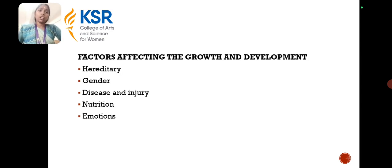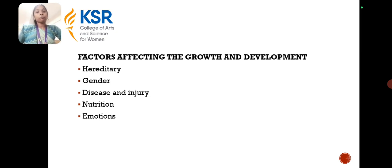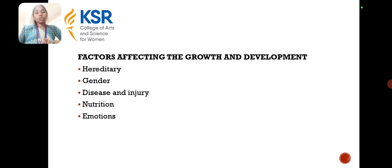These are the factors which affect the growth and development of children. Heredity is the major factor because it comes from the genetic gene itself. Gender is also a factor affecting children's growth and development, because male children and female children are in different genes, so they vary in their growth and development. Other factors include injury, nutrition, and emotions.